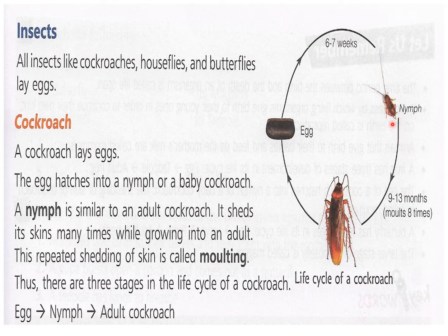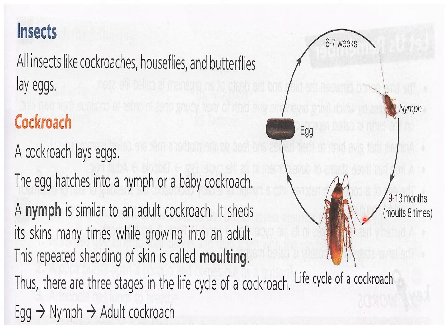In 9 to 13 months — that is almost a year — the nymph sheds its skin about 8 times. It molts 8 times and becomes an adult cockroach in almost a year. So this is called molting: the stage from nymph, molting 8 or 9 times, until it becomes an adult cockroach.